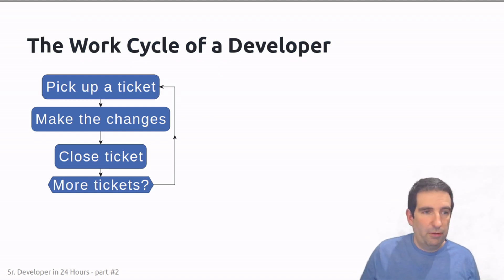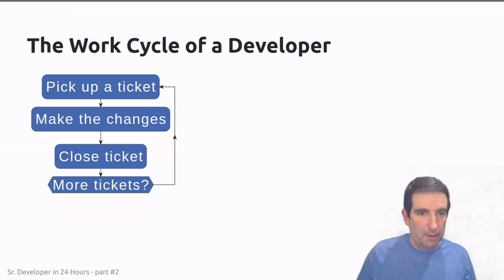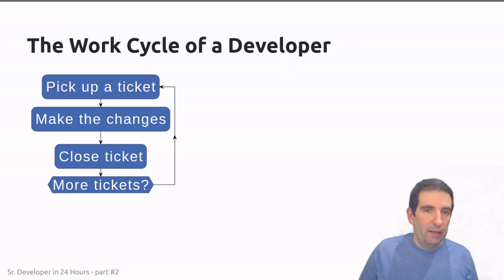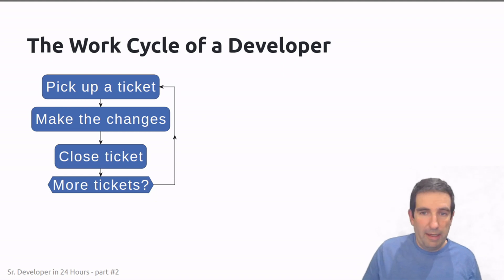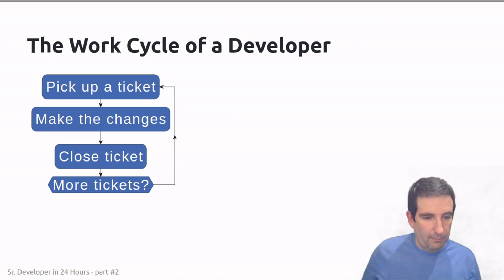Let's talk about the workflow of a developer — and this is normally a cycle. First they will pick up a ticket, work on it for however long it takes, then close the ticket, which means getting the code submitted, approved, and merged. Once the ticket is closed, they check if there are more tickets, pick up another one, and the cycle repeats.